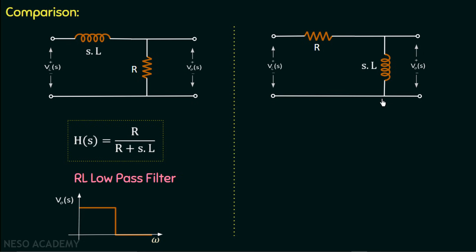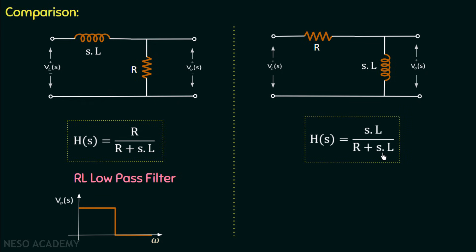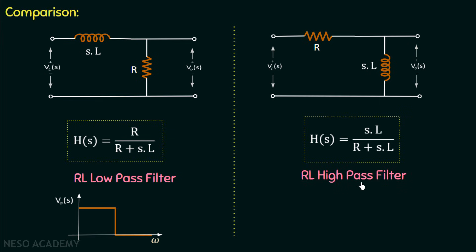Moving on to the circuit where the output voltage is measured across the inductor, its transfer function H(s) equals SL over R plus SL. For a low-frequency input voltage the inductor behaves as a short circuit and the output voltage is zero. But if we increase the frequency, the inductor behaves as an open circuit and the output voltage becomes non-zero. So for high frequency the output is non-zero and for low frequency the output is zero — this circuit is called an RL high pass filter.